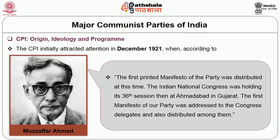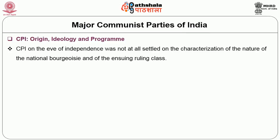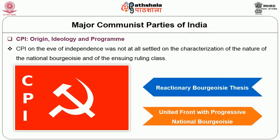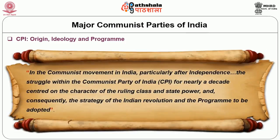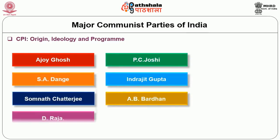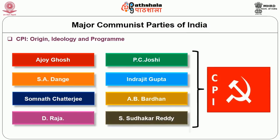The first manifesto of the party was addressed to the Congress delegates and distributed among them. The CPI on the eve of independence was not settled on the characterization of the nature of the national bourgeoisie and of the ensuing ruling class — it vacillated between the reactionary bourgeoisie thesis and the united front with the progressive national bourgeoisie thesis. The struggle within the Communist Party of India for nearly a decade centered on the character of the ruling class and state power, and consequently the strategy of the Indian revolution and the program to be adopted. Ajoy Ghosh, P.C. Joshi, S.A. Dang, Indrajit Gupta, Somnath Chatterjee, A.B. Bardhan, D. Raja, and S. Sudhakar Reddy are the most well-known faces of CPI.